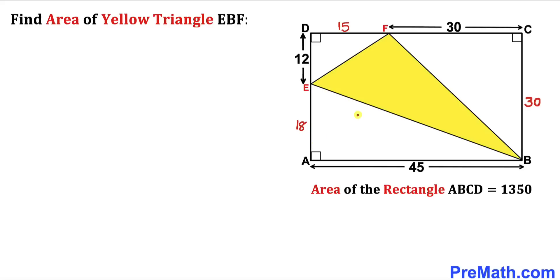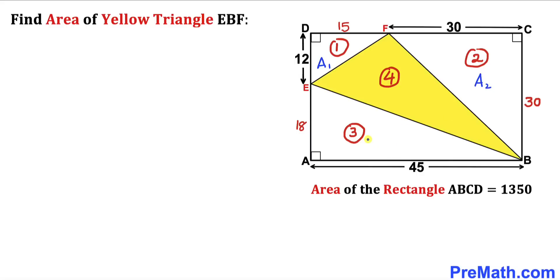Now let's label the triangles. I'll call the corner triangles triangle 1, triangle 2, and triangle 3, and finally the yellow triangle as triangle 4. The areas will be labeled A sub 1, A sub 2, A sub 3, and A sub 4 respectively.